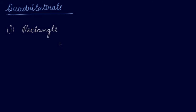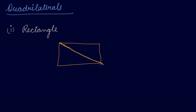This one is your set square — the kind given in our geometry box. We place the other set square on it in the opposite direction. If we place two set squares facing opposite directions, we get a rectangle like this. This is a rectangle.